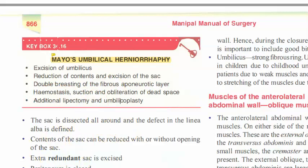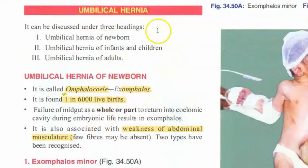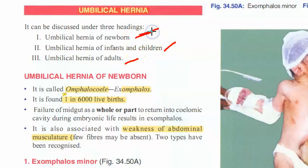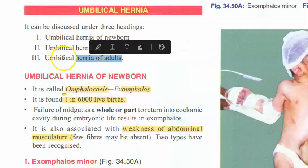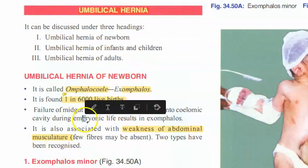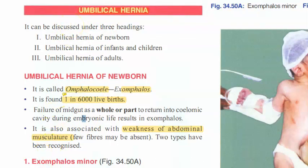To summarize, we have looked at all three types of umbilical hernia: newborn, infants and children, and adults. In newborns there are two types - minor and major exomphalos. In infants and children, nothing needs to be done as it is a true umbilical hernia that resolves by itself. In adults it is a para-umbilical hernia with symptoms that requires treatment, and Mayo's repair or mesh repair is used.